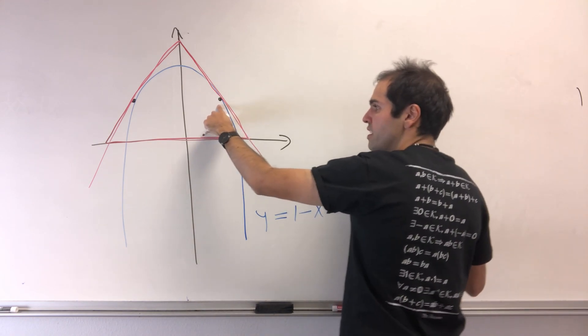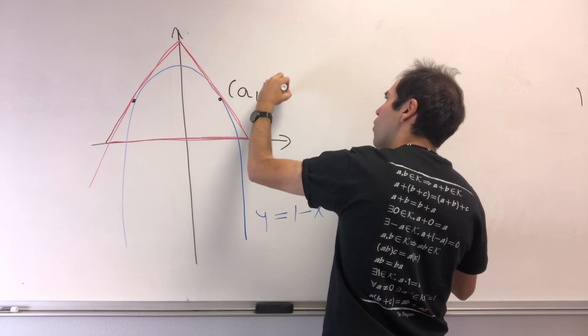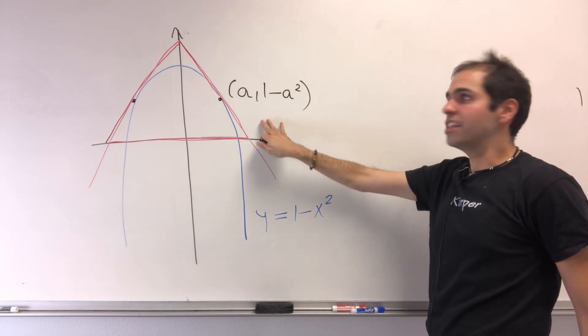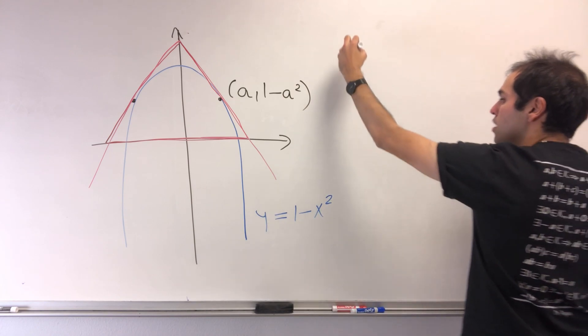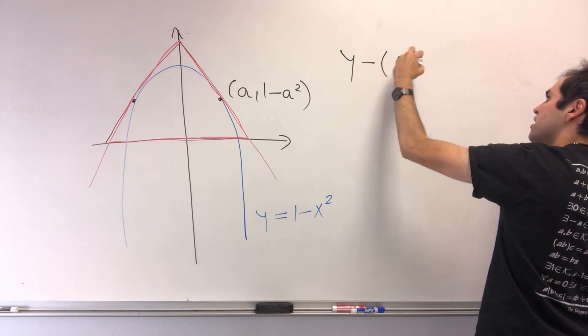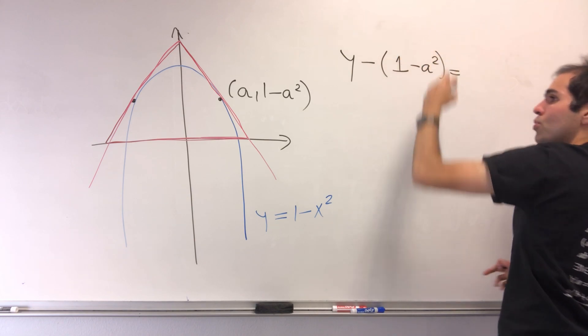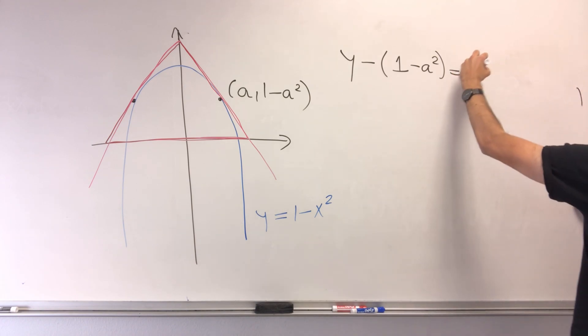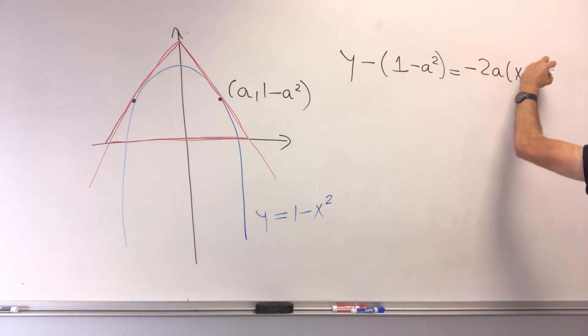Suppose this point is of the form (a, 1 minus a squared). Then let's find the equation of the tangent line at that point, which is y minus (1 minus a squared) equals the derivative at a, so minus 2a, times x minus a.